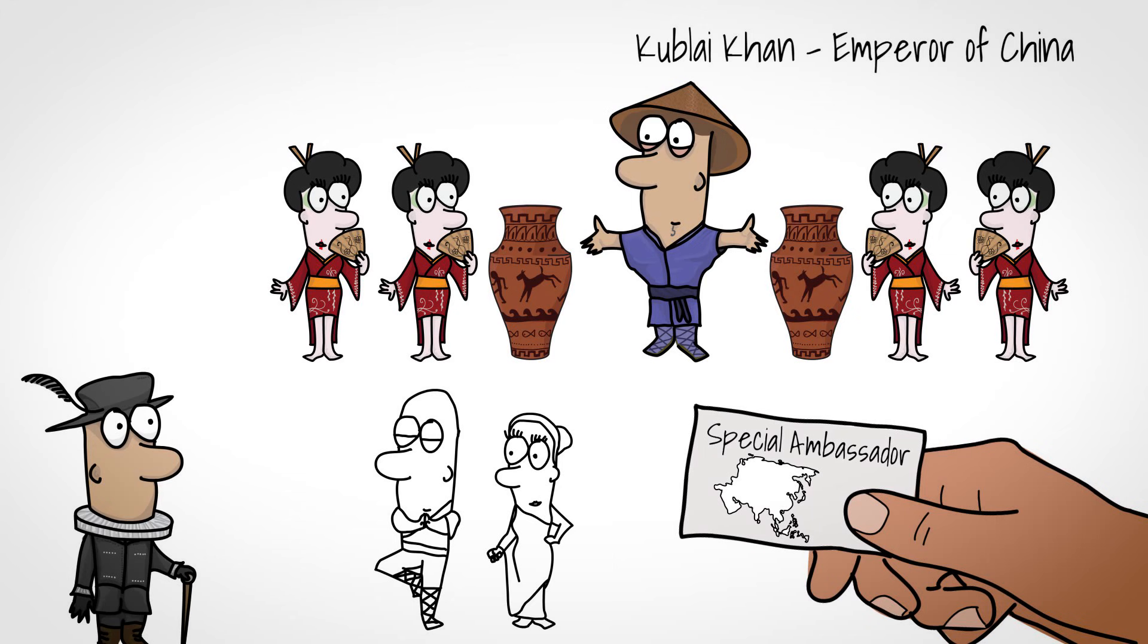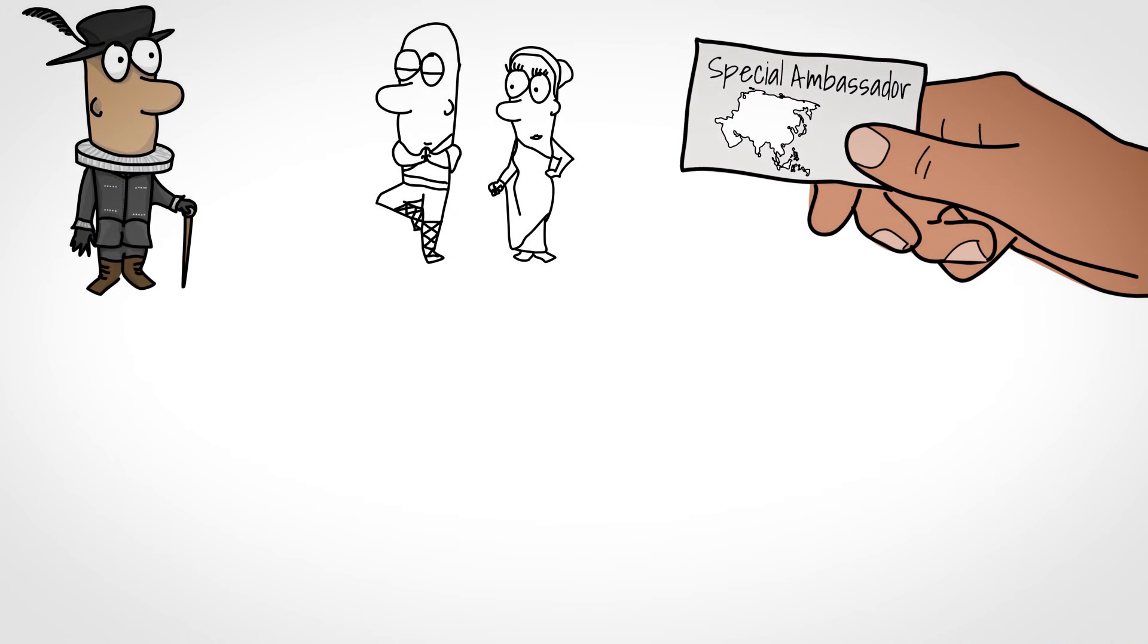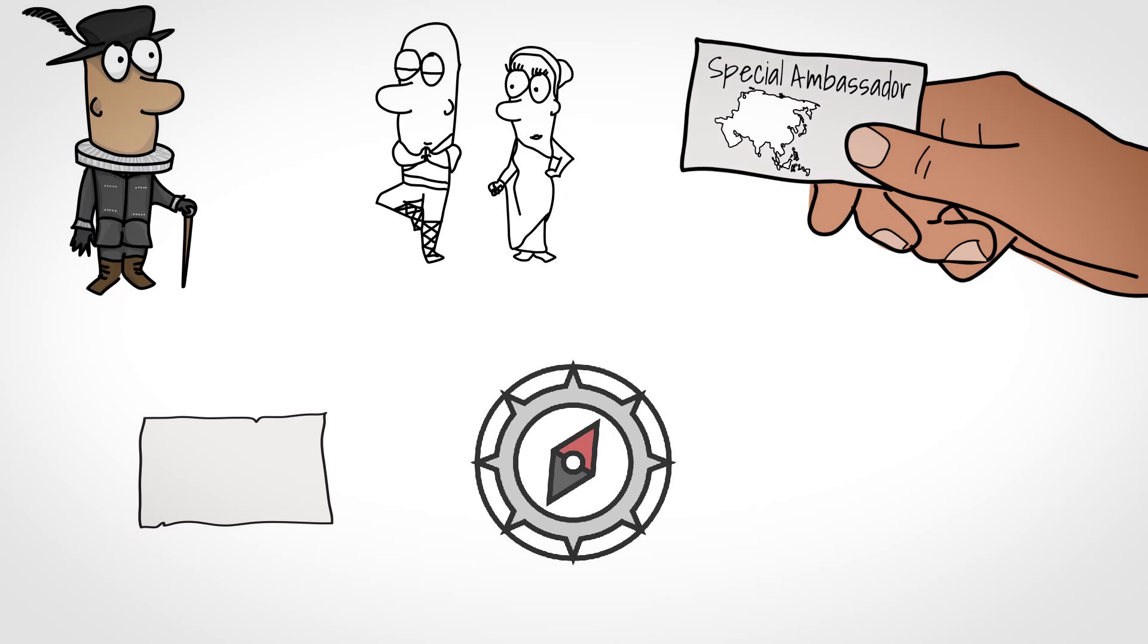Polo was not only tolerant of various different cultures and customs he came across, he also actively immersed himself in the society that he was in. In doing so, he discovered many inventions such as paper being created specifically for money, compasses for navigation and coal being used for heat instead of wood.